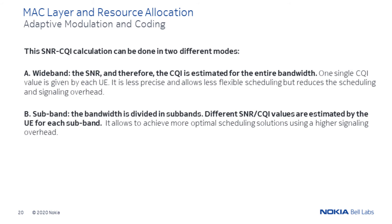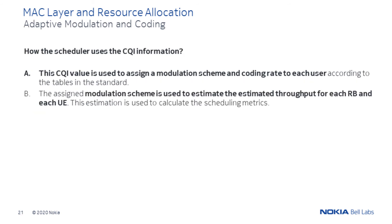On the other hand, in the subband mode, the bandwidth is divided into subbands in which individual CQI values are reported for each subband for each UE. Having a higher scheduling and signaling overhead, the resource allocation step is more precise and flexible. The CQI is used for two main steps: first, it is used to estimate the optimal modulation scheme for each resource block and each UE. Then, this modulation scheme is used to estimate the theoretical throughput for each resource block and each UE, which is used to calculate the scheduling metrics.